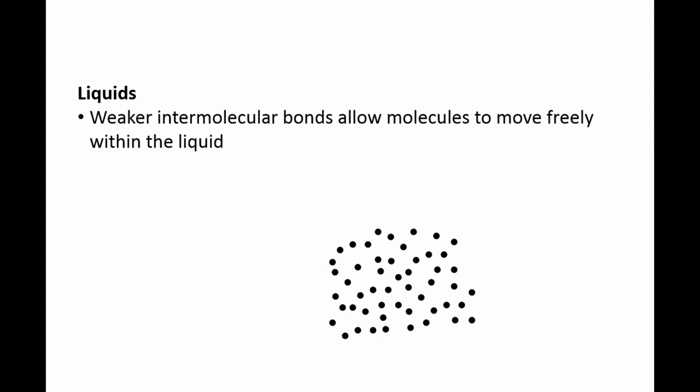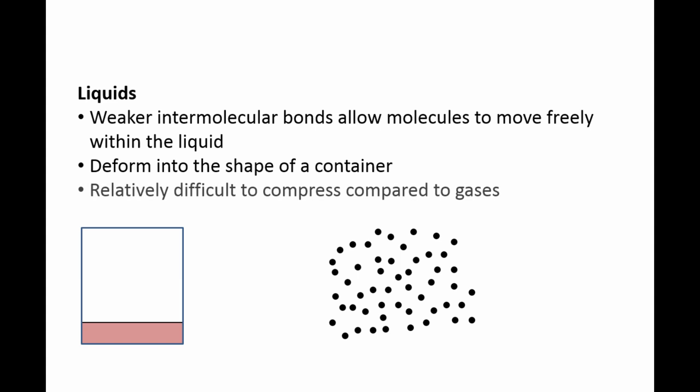Liquids have weaker intermolecular bonds, which allow the liquid molecules to move freely within the liquid bulk. If you place a liquid into a container, it will deform into the shape of the container. Liquids like solids are relatively difficult to compress compared to gases.